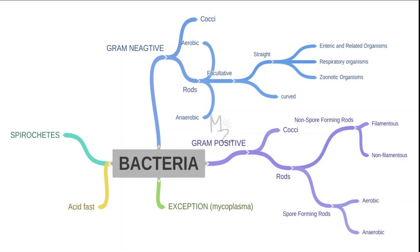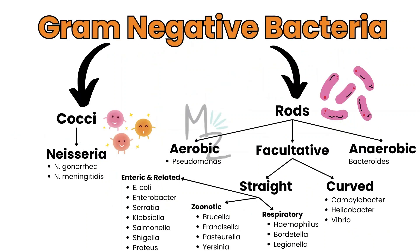Before talking about Bacteroides Fragilis in more detail, we should note bacterial classification. Bacteria are classified into spirochetes, and also based on acid-fast staining — with an exception being mycoplasma. Bacteria are also classified based on gram staining into gram-positive and gram-negative. Gram-negative are further subdivided into cocci like Neisseria gonorrhea and Neisseria meningitidis, and also into rods. Rods are further subdivided into aerobic like Pseudomonas, anaerobic like Bacteroides, and facultative.